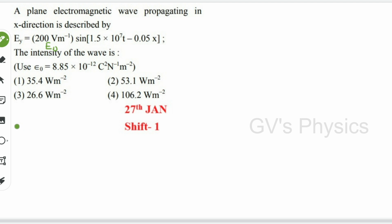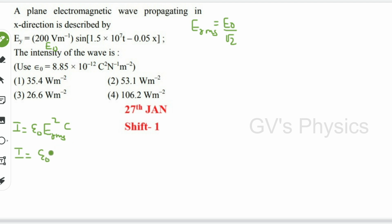To find the intensity of the wave, the formula is I = ε₀ · E_rms² · c, where c is the velocity of light. We can expand E_rms as E₀ divided by √2. Substituting into the formula, intensity I = ε₀ · (E₀²/2) · c. So this is the formula for intensity with respect to E₀, the peak value of the electric field.